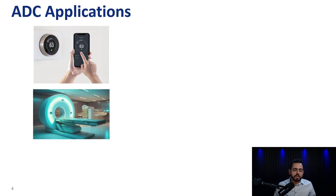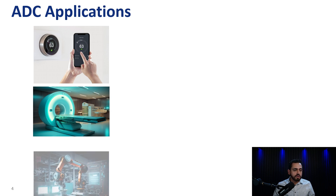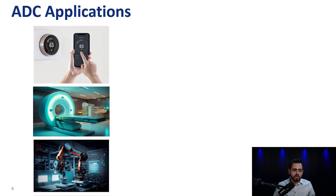Another popular application is medical imaging and diagnostics, where ADCs are used in devices such as MRIs, CT scans, and digital x-rays, where they convert high-speed analog signals into high-resolution digital images. Usually, high-speed ADCs are utilized in this type of application where a high sampling rate is required. Another popular application is industrial automation and controls, where high precision and high resolution are usually needed — applications such as process controls, factory automation, robotics, and so on.